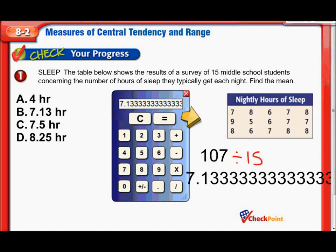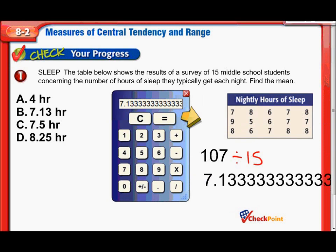And that gets us 7.13 repeating. Here's our answer, B, 7.13 hours. So again, you just add them up, divide by how many pieces of data you have, and choose your correct answer.